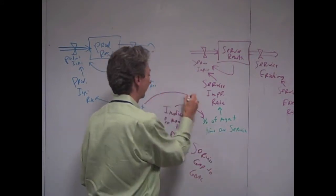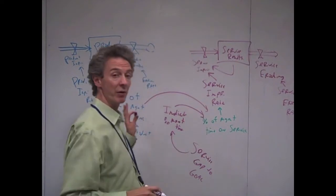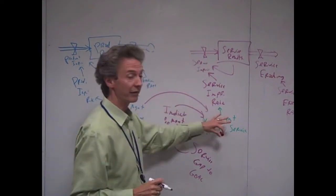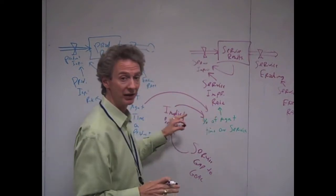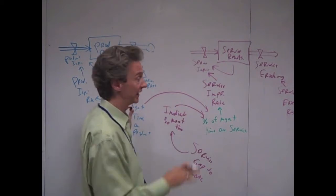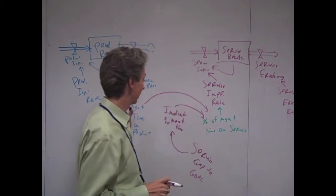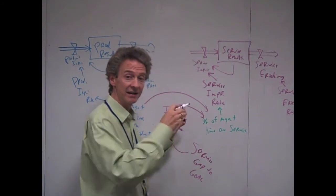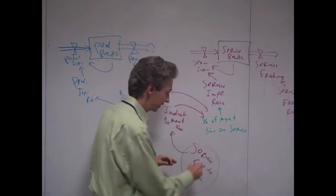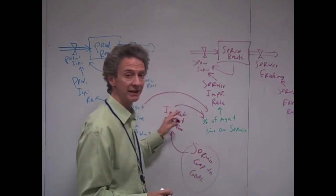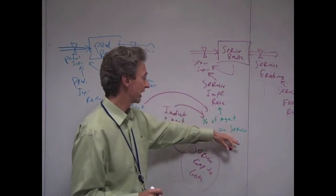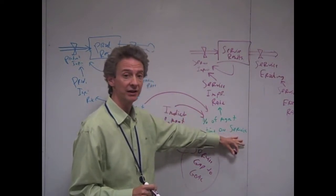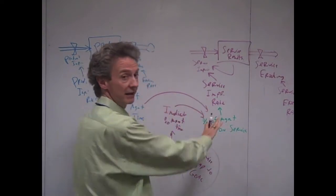But basically what happens is you have an indicated time that drives your real management time you spend on it, and you have the time that you're spending on product as your other factor. And these two in combination, the time you're spending on the product might deprive you of time you can spend on service. So that's how the two loops connect right here.